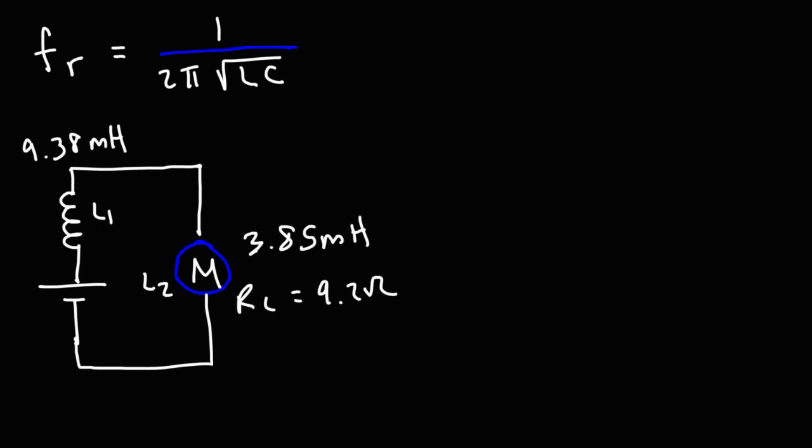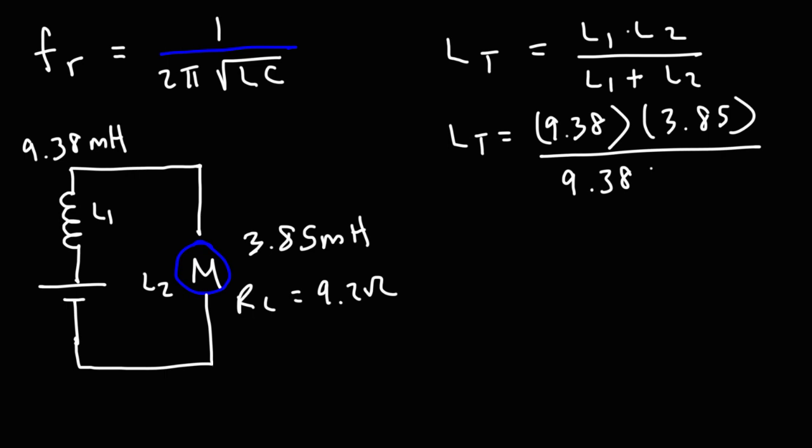To do that, we need to determine if the inductors are in series with each other, or if they are in parallel. With respect to the motor, when drawn this way, they appear to be in parallel. The total inductance of two inductors parallel to each other is the product of L1 and L2 divided by the sum of those two inductors. So it's 9.38 times 3.85 divided by 9.38 plus 3.85.